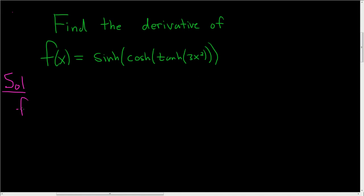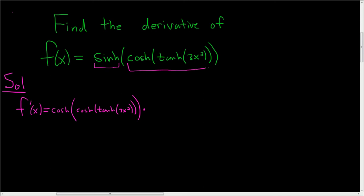So f prime of x — we're going to have to use multiple chain rules. The outside function: the derivative of sinh is cosh of all of that stuff. So cosh of the hyperbolic tangent of 3x squared, times the derivative of the inside.